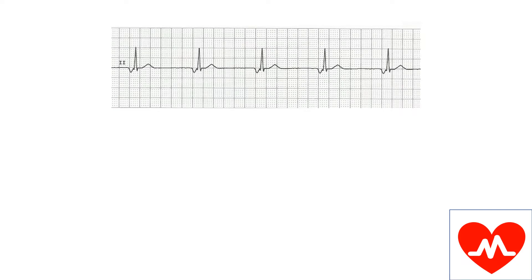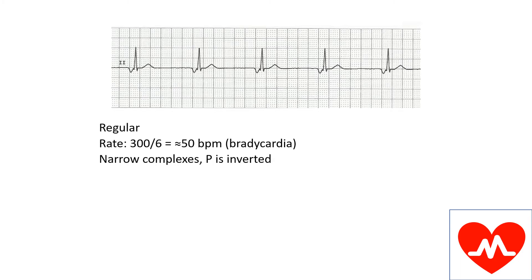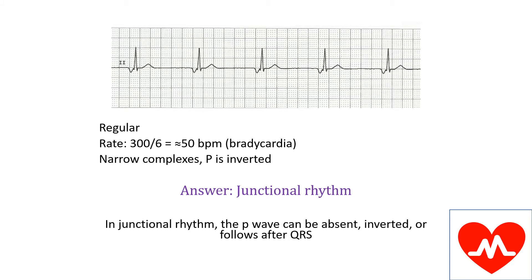There is a regular rhythm. The rate is about 50 beats per minute, so it is a bradycardia. There are narrow complexes. However, the P wave is inverted. So this is junctional rhythm. In junctional rhythm, the P wave can be absent, inverted, or follows after a QRS.